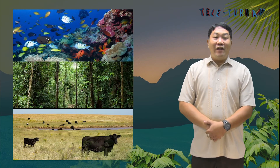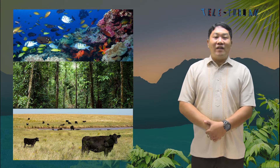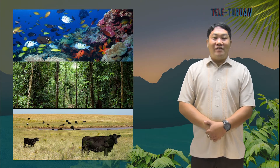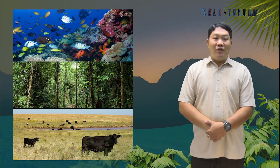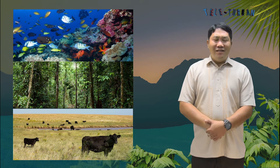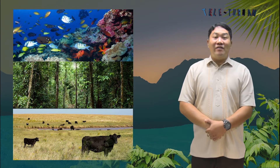Animals obtain their food and energy by consuming other organisms. Though animals differ in many characteristics, each of them plays an important role in the ecosystem. They are able to grow, move, reproduce, metabolize, respond to stimuli, and adapt to their environment. On this lesson, you will be able to determine the distinguishing characteristics of vertebrates and invertebrates.